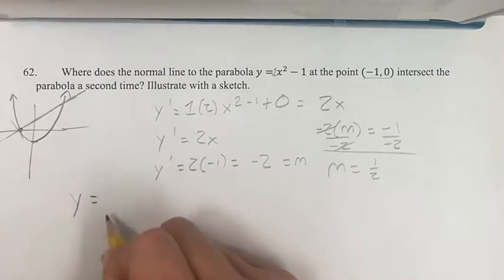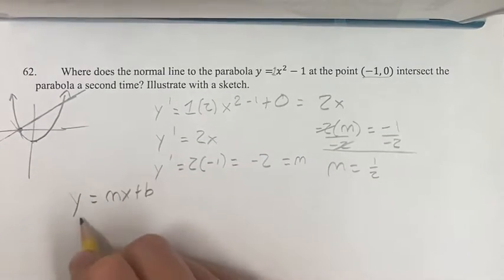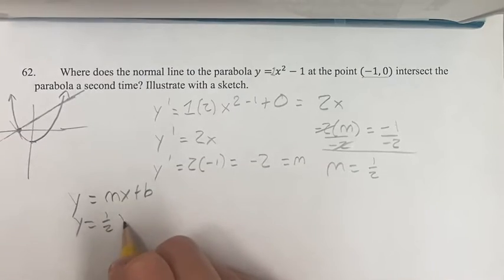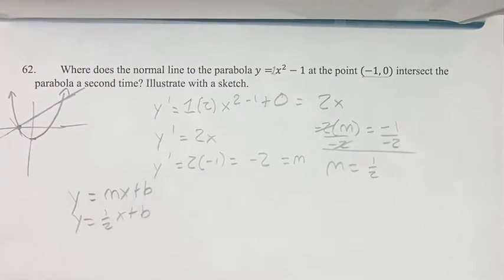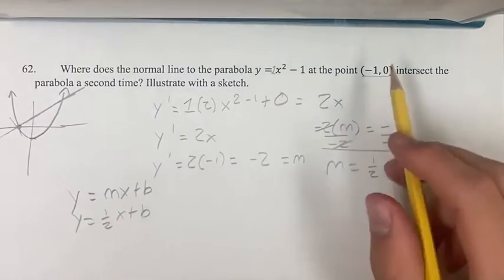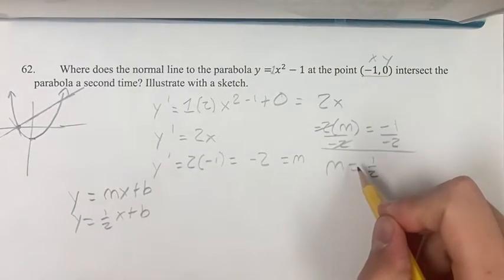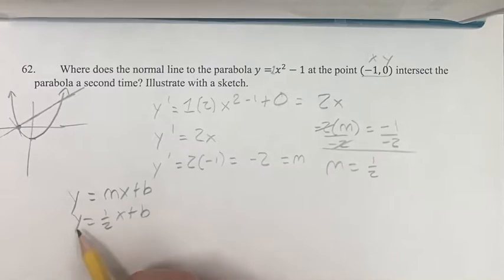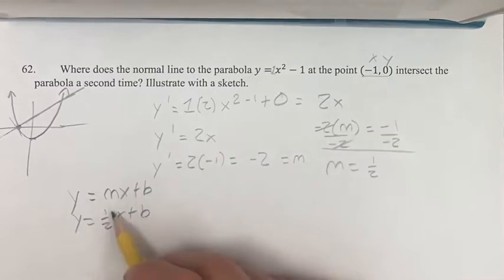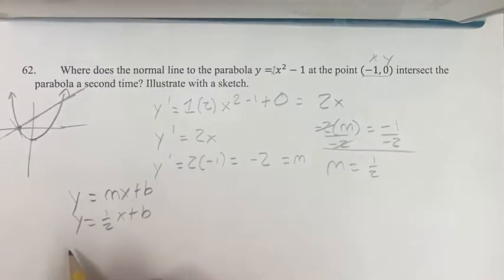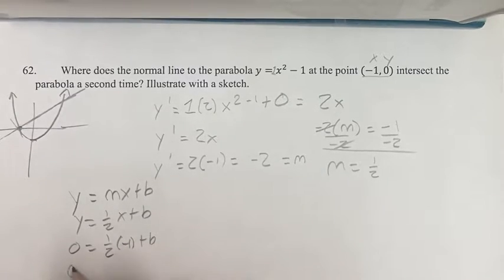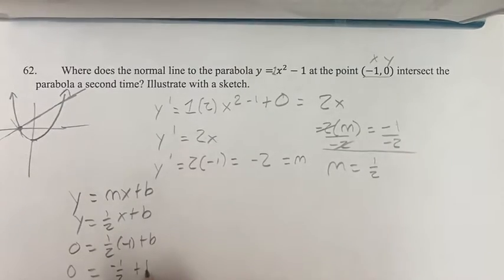Now we have y equals mx plus b, equation of a line. We know our slope is 1 half. Now we know that the point negative 1, 0 is on this line. So therefore if we plug 0 in for y and negative 1 for x, we can solve for b. So 0 equals 1 half times negative 1 plus b. 0 is equal to negative 1 half plus b.